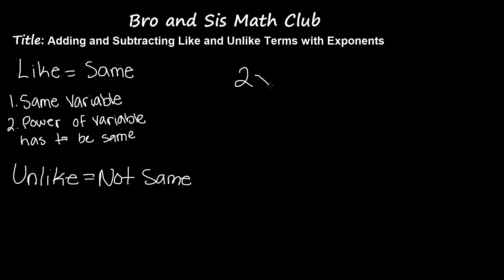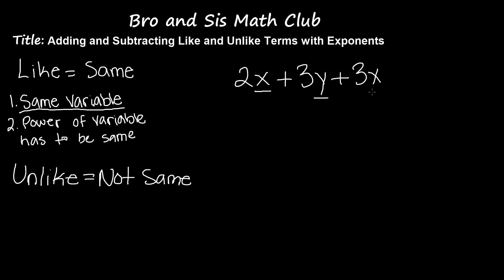We have 2x plus 3y plus 3x. Remember, to find if they're like terms, we first have to find if they have the same variables. In 2x, the variable is x. In 3y, the variable is y. And in 3x, the variable is x. So we see something in common — we see x in both 3x and 2x. So we've found two common terms.